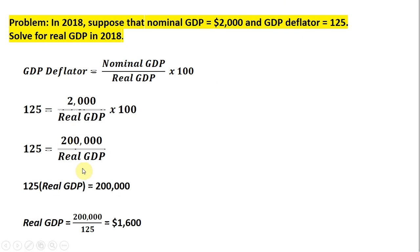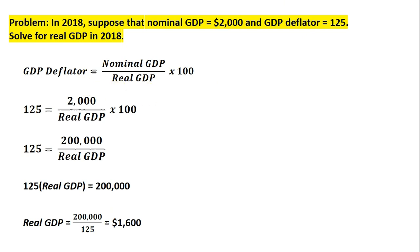Multiplying both sides through by real GDP, we get 125 times real GDP equals 200,000. Then dividing through by 125, we get an answer of 1,600 for real GDP. That's a slightly more complicated problem, but not too bad if you recall the GDP deflator formula, plug in what you know, and solve for the one unknown.